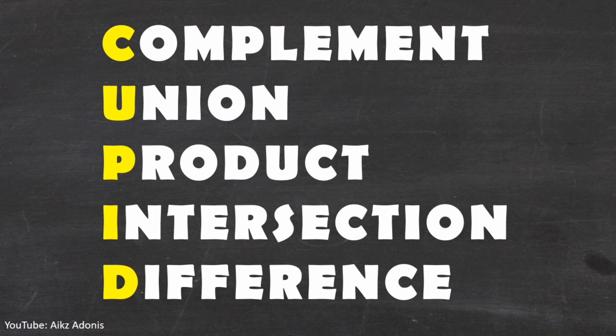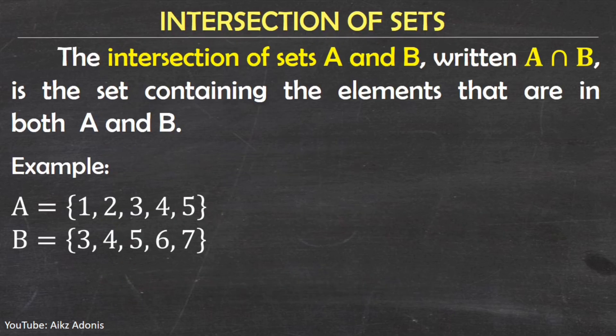Now let's discuss the set operations. Let's start with the intersection of sets. The intersection of sets A and B, written as A intersection B, is the set containing the elements that are both in A and B. This intersection symbol means that there are common elements in two sets.